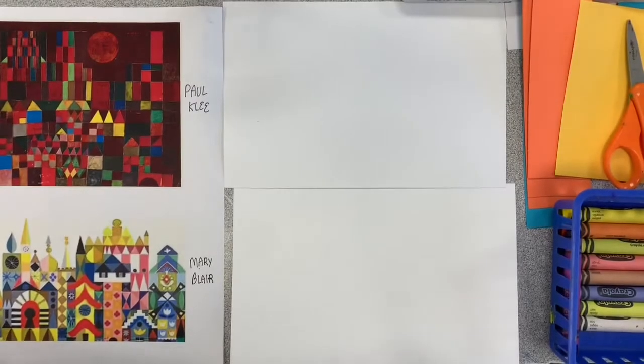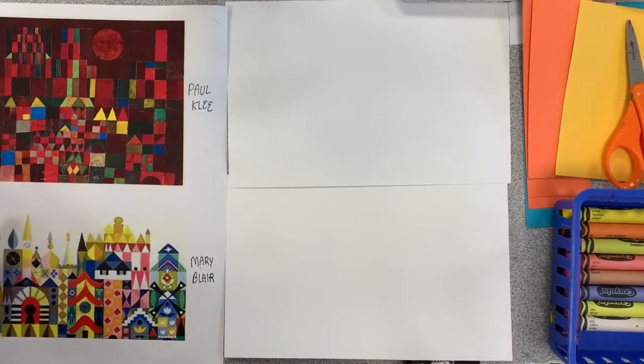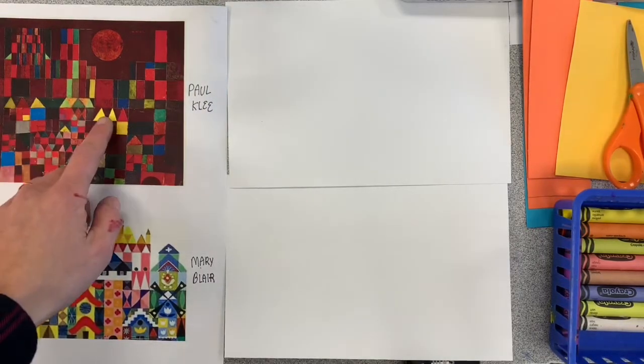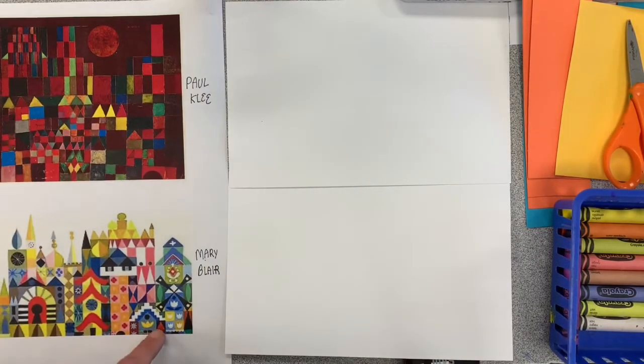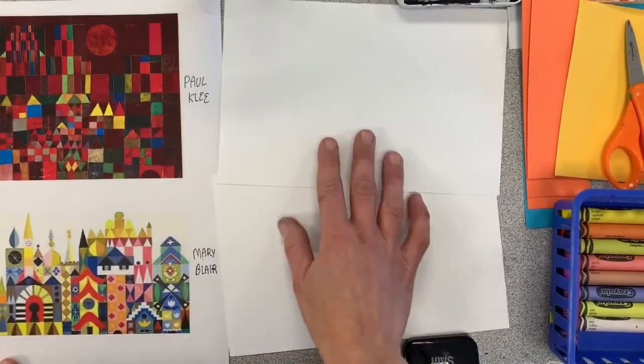So pretty. So now I'm going to walk you through how to make a collage in the style of Paul Klee with lots of geometric shapes or in the style of Mary Blair, which also has a lot of organic shapes.